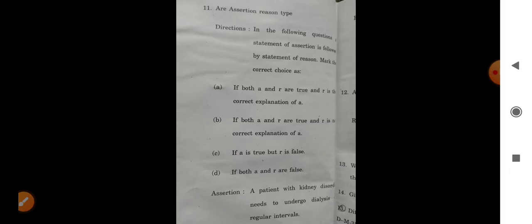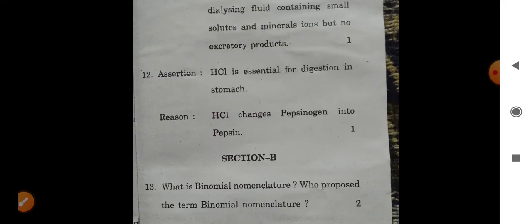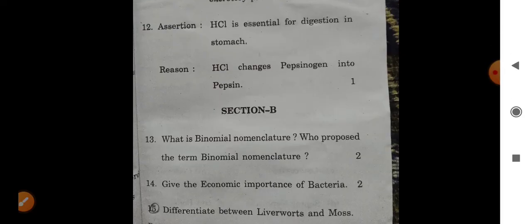Assertion: A patient with kidney disorder needs to undergo dialysis at regular intervals. Reason: During dialysis, blood is separated by a selectively permeable membrane moving in opposite direction to dialysis fluid containing small solutes and minerals but no nitrogenous waste material. Question 12: HCl is essential for digestion in stomach. HCl changes pepsinogen into pepsin.